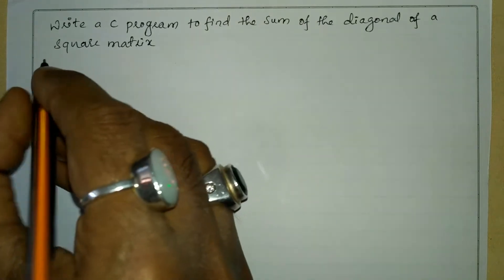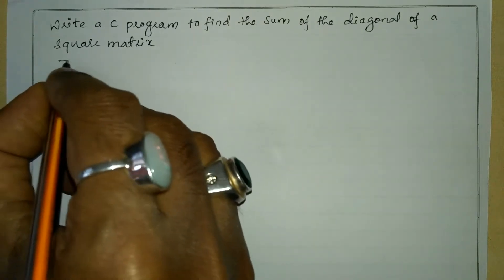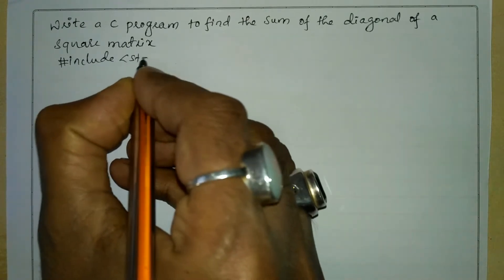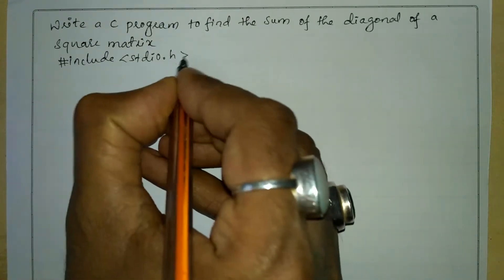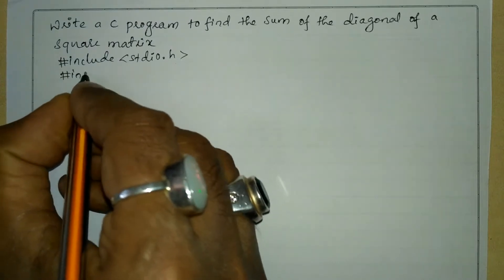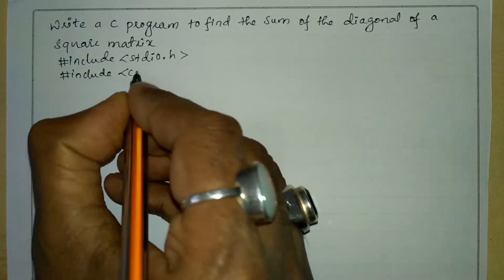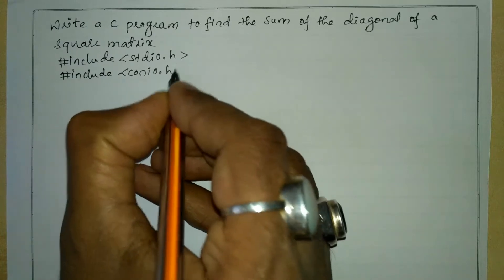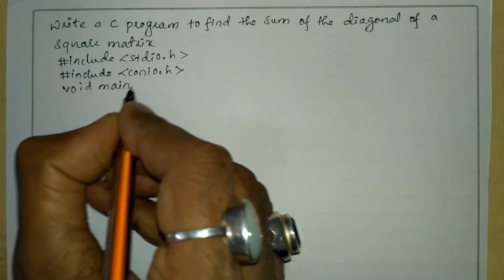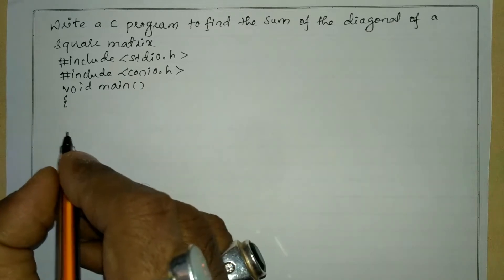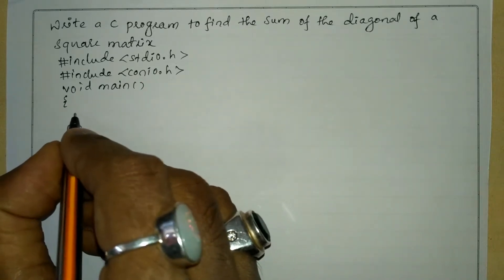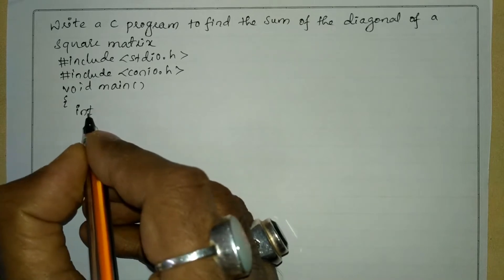Let us write the preprocessor directives. Hash include in angular brackets we'll write standard input output dot H header file. Hash include in angular brackets we'll write console input output dot H header file. Now I'm going to write the void main function with an opening curly brace.